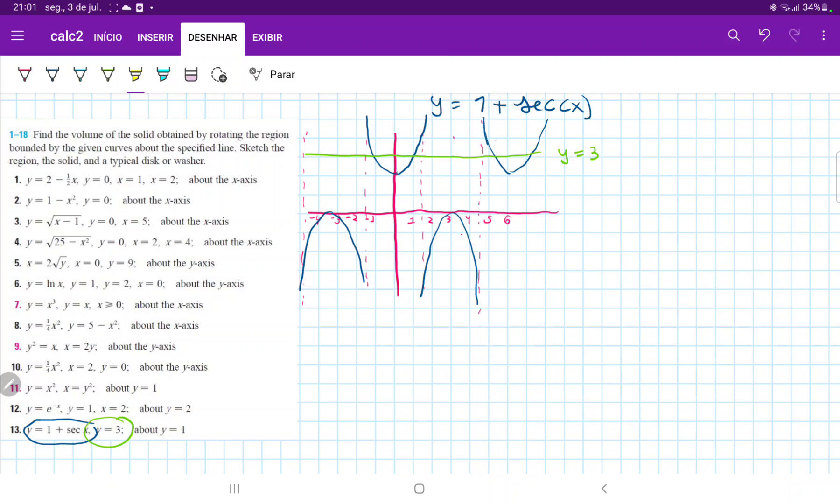So there are actually infinite areas, because the graph of 1 plus secant intersects, it repeats forever and ever. So it actually intersects the line y is equal to 3 a bunch of times.